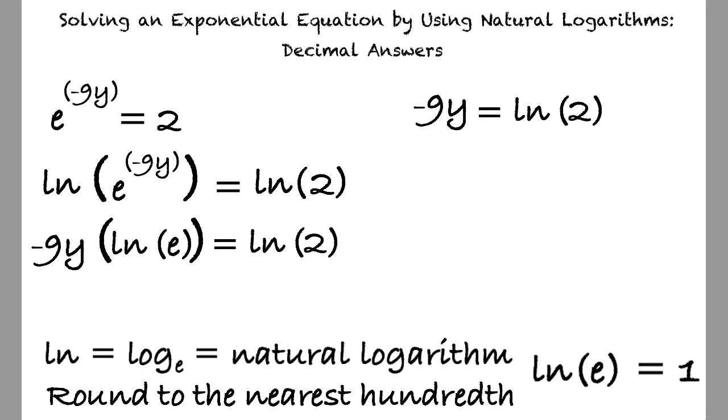We can further simplify this equation by dividing both sides by negative 9, yielding y equals ln of 2 divided by negative 9. Inputting this equation into the Alex graphing calculator results in y equals negative 0.08 after rounding to the nearest hundredth.